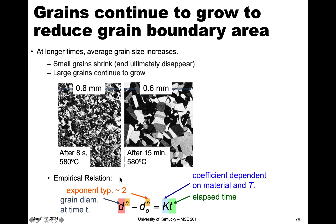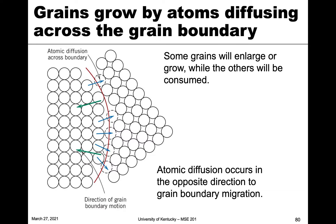Grain growth can actually be defined as an empirical relationship — an observed relationship that we see. We can see that the diameter of a grain at any time, related to its initial diameter by an exponent n — which can be close to two — is equal to a coefficient of the material and temperature, which is basically a constant, multiplied by time. So it has this second-order relationship, which defines the growth rate.